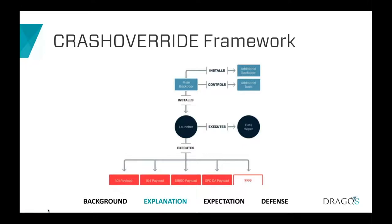Looking at Crash Override as an overall framework, there is a main backdoor at the top. It can deploy various other pieces including additional backdoors that ESET mentioned, as well as tools like a port scanner. Primarily the Crash Override framework consists of this backdoor installing a launcher, which fires off one of four distinct ICS-focused payload modules and then executes the data wiper thereafter.